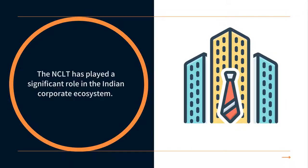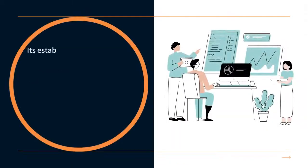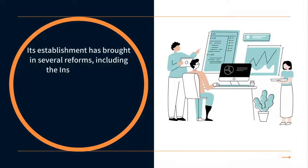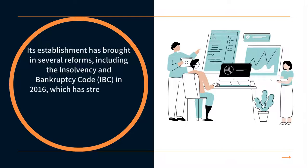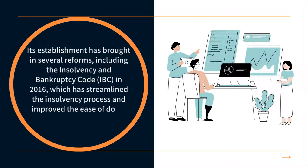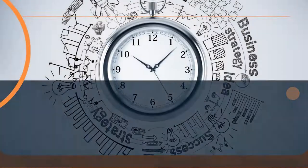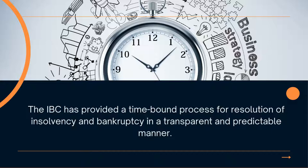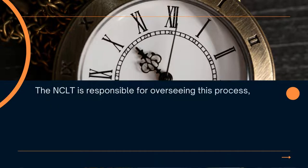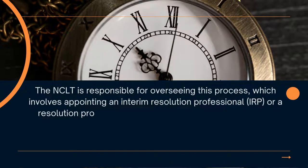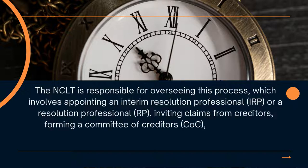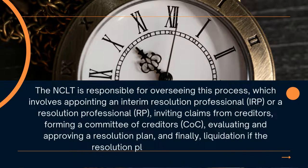The NCLT has played a significant role in the Indian corporate ecosystem. Its establishment has brought in several reforms, including the Insolvency and Bankruptcy Code, IBC, in 2016, which has streamlined the insolvency process and improved the ease of doing business in India. The IBC has provided a time-bound process for resolution of insolvency and bankruptcy in a transparent and predictable manner. The NCLT is responsible for overseeing this process, which involves appointing an interim resolution professional (IRP) or a resolution professional (RP), inviting claims from creditors, forming a committee of creditors (COC), evaluating and approving a resolution plan, and finally liquidation if the resolution plan is not approved.